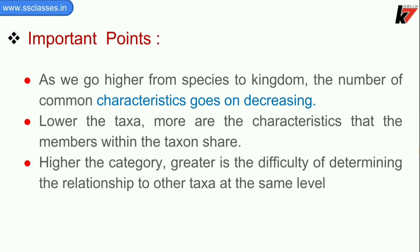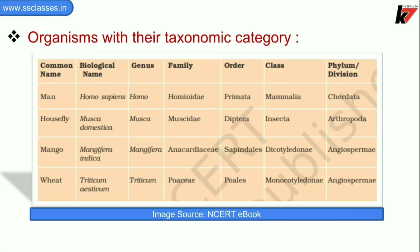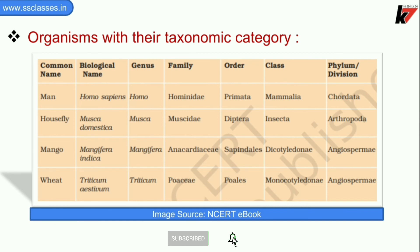Higher the category, greater is the difficulty of determining relationships to other taxa at the same level. There is a particular and famous chart showing organisms in their taxonomic categories — including common name, biological name, genus, family, order, class, and their phylum or division. For example: Man is Homo sapiens; housefly is Musca domestica; mango is Mangifera indica; and wheat's biological name is Triticum aestivum. You should go through this chart and remember all these details, as questions will be asked from it.